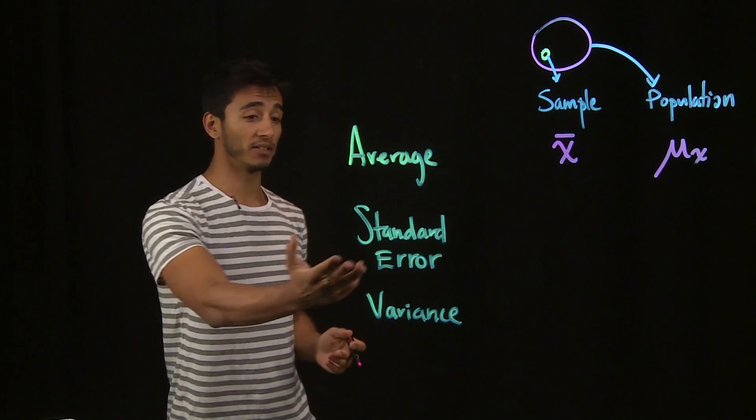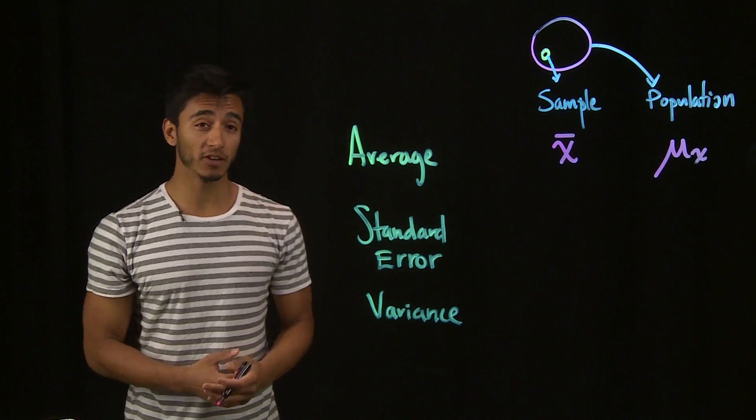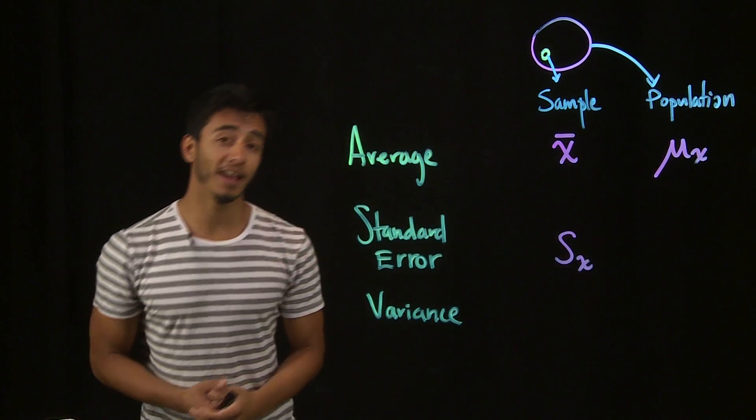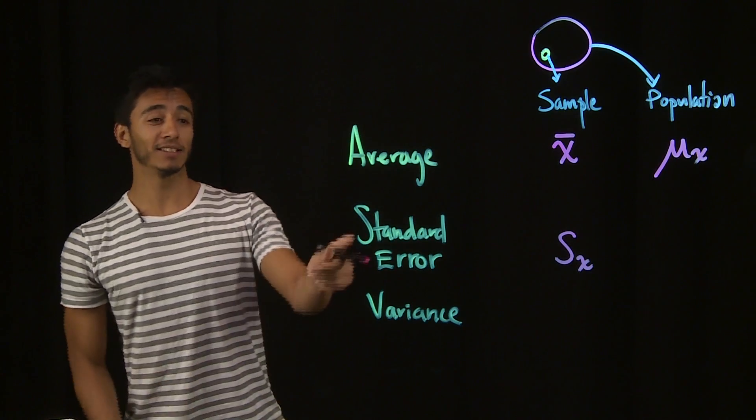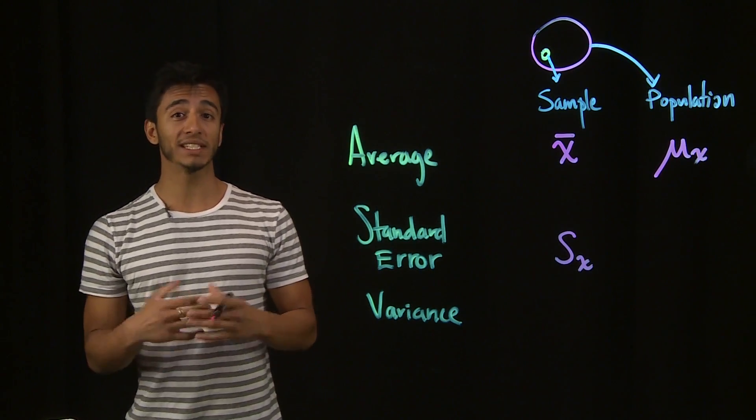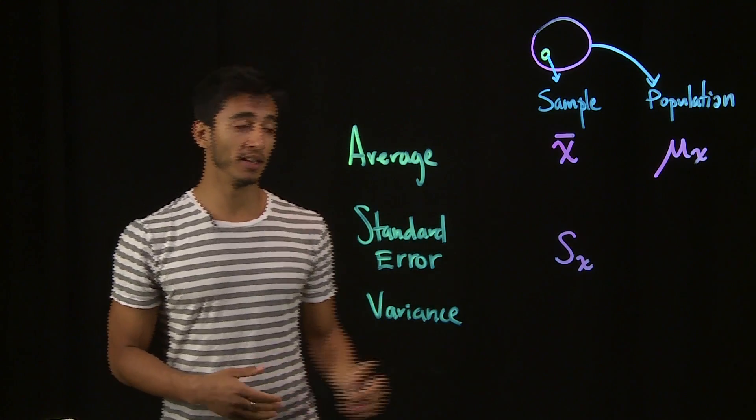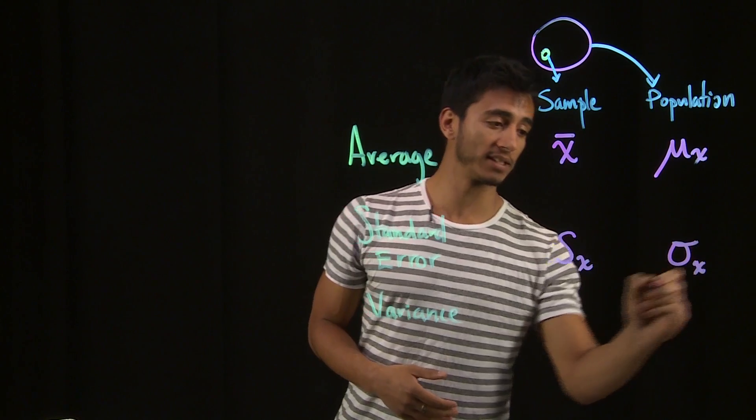Now, when we're talking about the standard error, the standard error of a sample would be s of x and the standard error or standard deviation of a population is sigma of x.